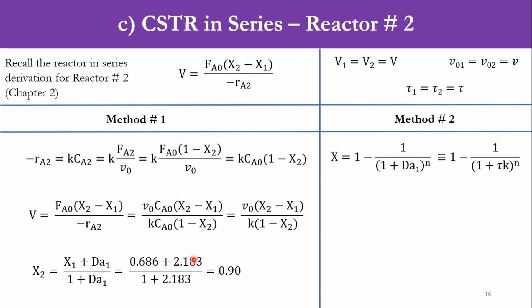Second way of doing it, that we know that X is equal to 1 minus 1 over 1 plus DA1 raised to power N or 1 minus 1 over 1 plus tau k whole raised to power N. We had derived that in our previous slide. Now accordingly for the second system, it will be 1 minus 1 over 1 plus DA1 raised to power 2. X2 is equal to this. And DA1 is 2.183, so accordingly we get 0.9. So either you can use that relation or you can use that relation. Both relations give you the same answer.